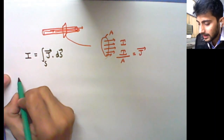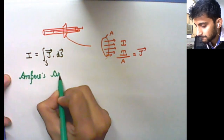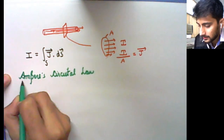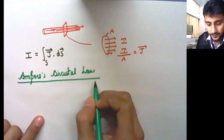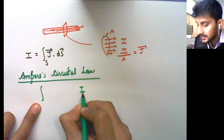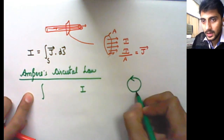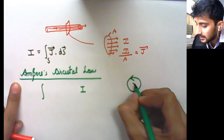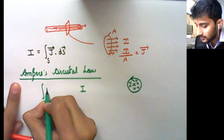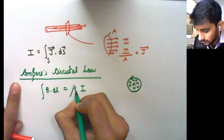Now we will use another known fact — Ampere's circuital law. If you have a current I flowing in a closed loop, then the magnetic field inside this loop is related to this current in the form: B dot dL equals mu naught times I.